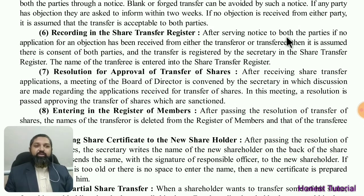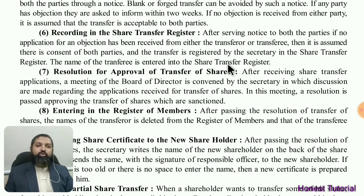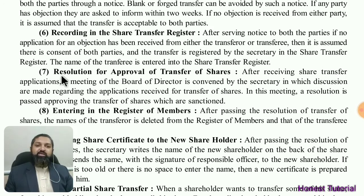The next procedure is recording in the share transfer register. After serving notice to both parties, if no objection has been received from either the transferor or transferee, it is assumed there is consent of both parties. The transfer is then registered by the secretary in the share transfer register — the name of the transferee is entered into the register.